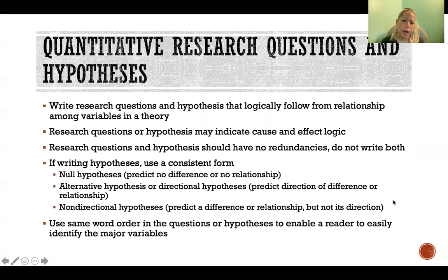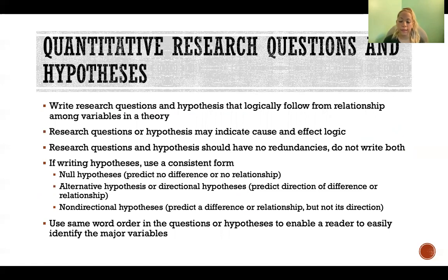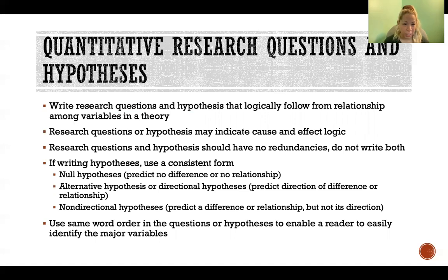Research questions and hypotheses should follow logically from a relationship among variables in a theory. You're building on what is already in the literature and what theories are available to help you predict this relationship. You should be developing your research questions and hypotheses based on already established theories and information — you're not just coming up with them out of nowhere. You should be able to defend why you chose those values or why you expect to see that kind of relationship.